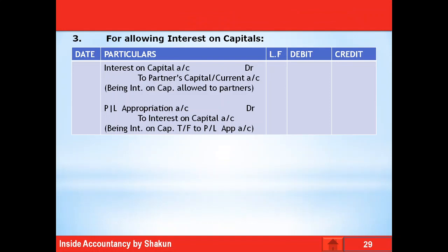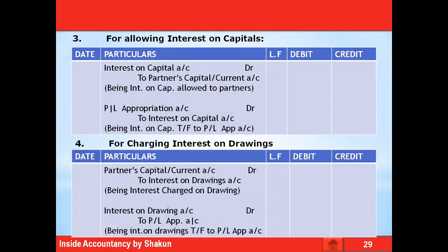The next entry is for allowing interest on capital. Since interest on capital is an expense for the firm, it is debited and the respective partner's capital or current accounts are credited. This interest on capital, being an appropriation, is transferred to the P&L appropriation account — not the P&L account — because all appropriations are transferred to P&L appropriation account. The next entry is for charging interest on drawings. Since interest on drawings is an income for the firm, it is credited, and the partner's capital or current accounts are debited. Interest on drawings, being an income, is transferred to the credit side of P&L appropriation account. Therefore, the entry is: Interest on Drawings Account DR to Profit and Loss Appropriation Account.